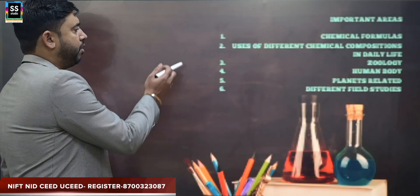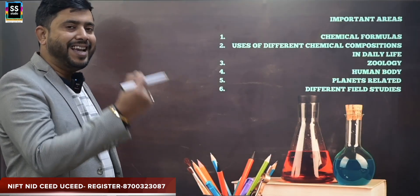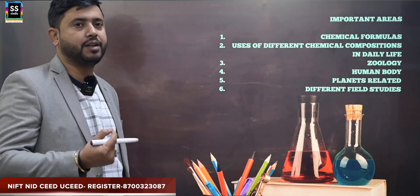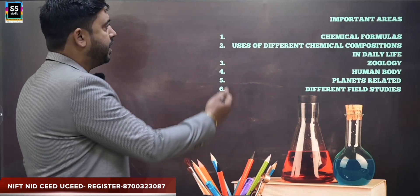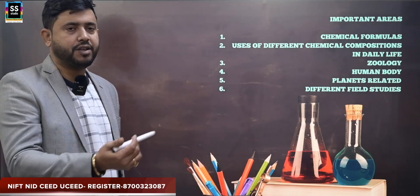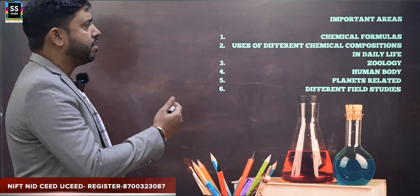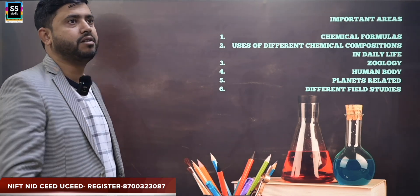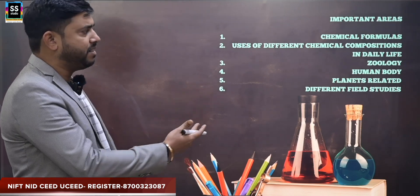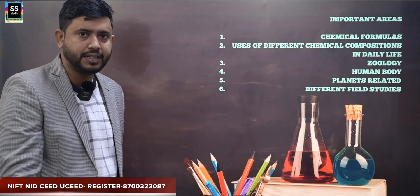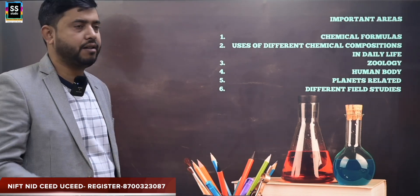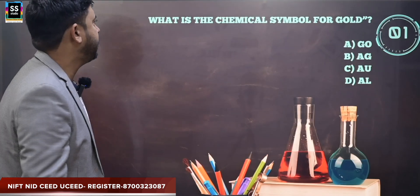Going forward, the important areas where you can study for GK — areas from which questions may come in science: chemical formulas, uses of different chemical compositions in daily life, zoology such as animals and the human body, planets, and different field studies. These are some of the areas from where you can study.